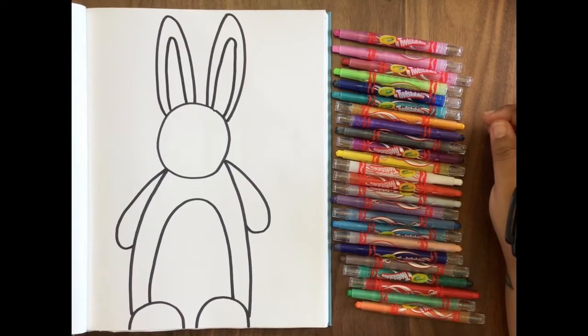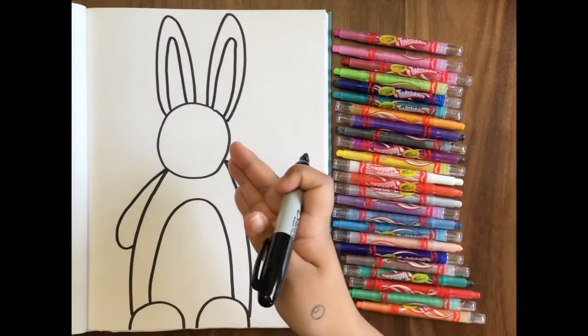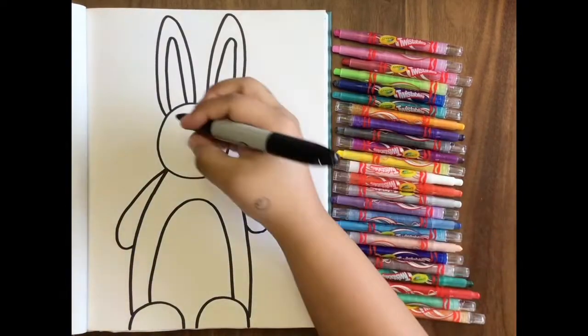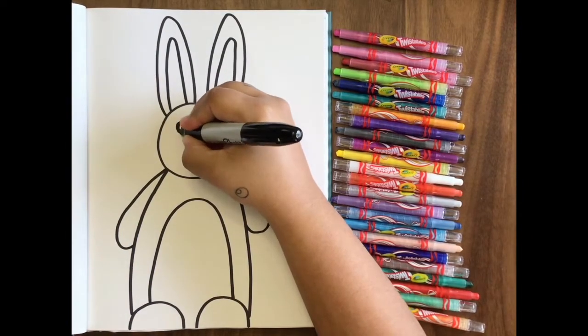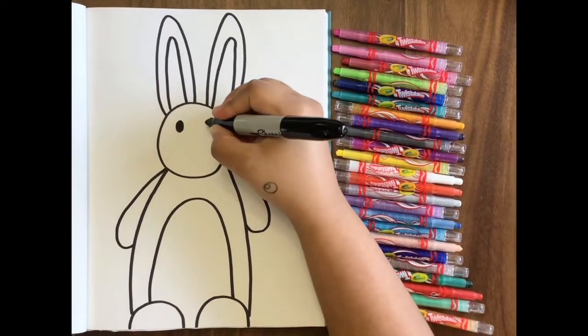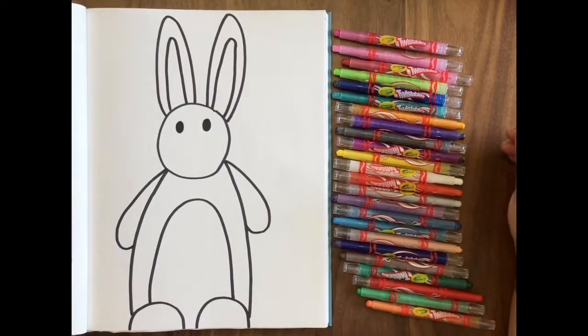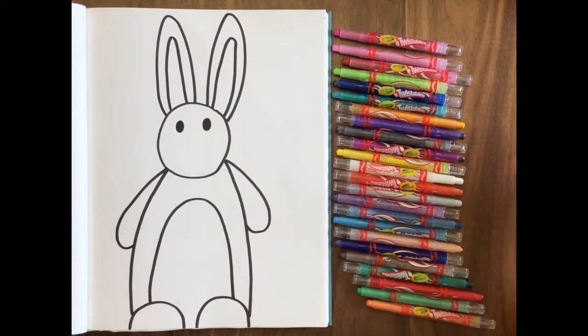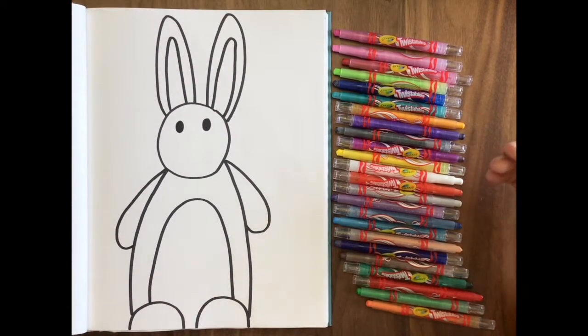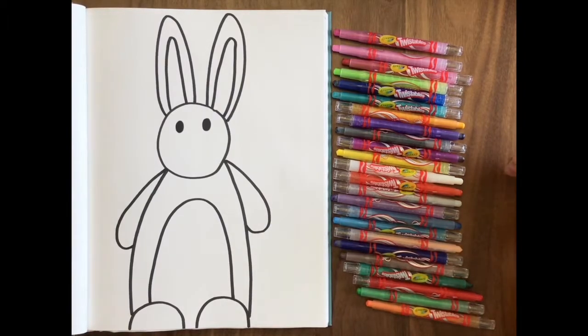And last but not least, before we start coloring, our bunny needs a face. So the first thing we're going to do is we're going to make two little eyes. Again, if you want to do some cute eyes that you might have learned at home, go for it. That'd be awesome. If you want to add some eyelashes or eyebrows, you guys can do that today too.